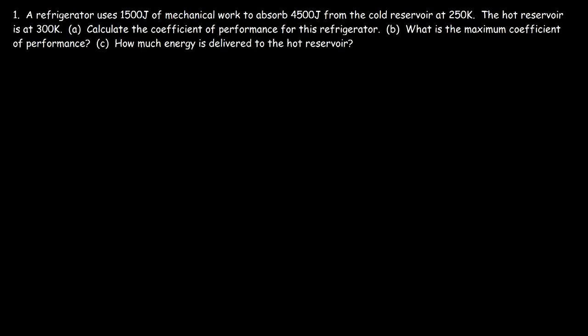In this video we're going to solve some basic problems associated with heat pumps and refrigerators. A refrigerator uses 1,500 joules of mechanical work to absorb 4,500 joules from the cold reservoir at 250 Kelvin. The hot reservoir is at 300 Kelvin. Calculate the coefficient of performance for this refrigerator.